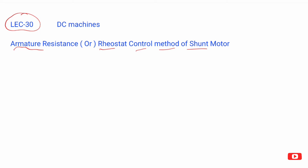In the next step we have DC shunt motor field control method. DC shunt motor with armature resistance — inserting an external resistance in the armature circuit changes the current. That is, we use an external resistance.